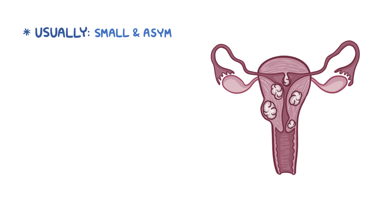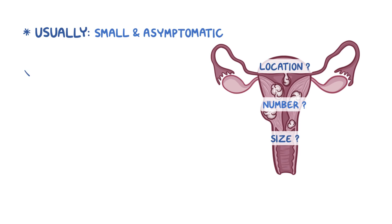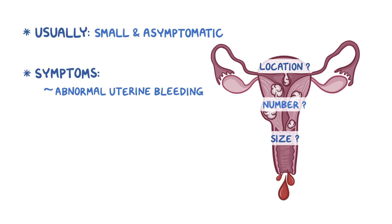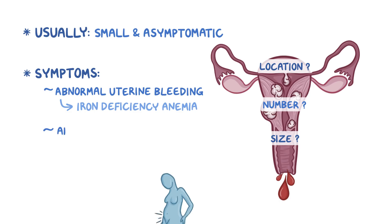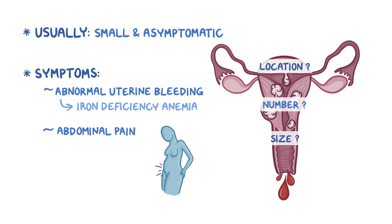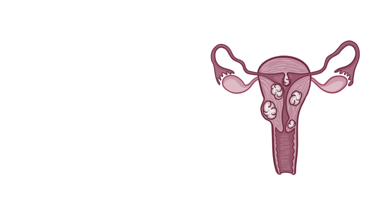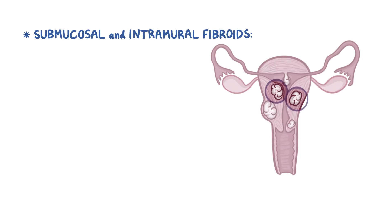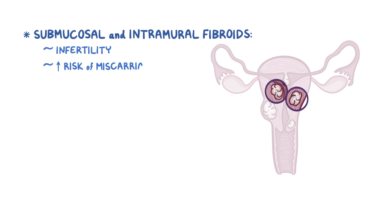Fibroids are usually small and asymptomatic, but their location, number, and size can sometimes lead to symptoms like abnormal uterine bleeding, which takes the form of heavy or long menstrual bleeding. Over time, this can lead to iron deficiency anemia. Fibroids can also cause abdominal pain and inflammation because the fibroids put pressure on pelvic organs. Submucosal and intramural fibroids in particular are also associated with infertility and a high risk of miscarriage.